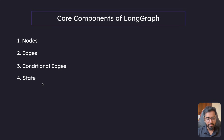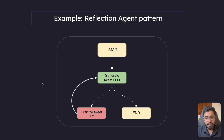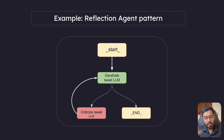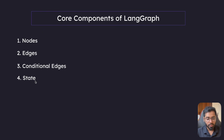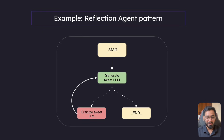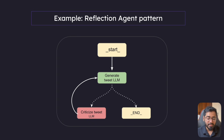Finally, we have state. Even in this simple example, you can imagine that the green LLM generates something, the red LLM gives feedback, and then the green LLM generates something again. The entire context needs to be maintained, which is why state is also a core component of LangGraph. In the next section, we are going to deep dive into what the reflection agent pattern is, how to build it, why we build it, the real world applications, and we'll actually build it from scratch using code.